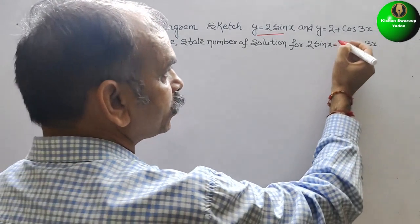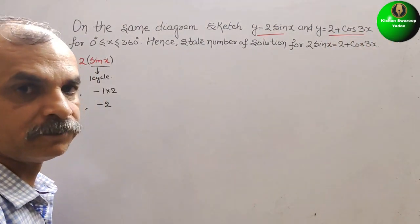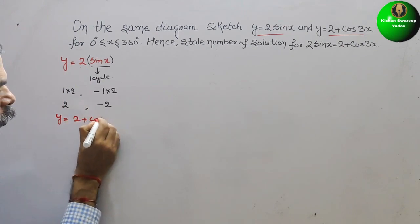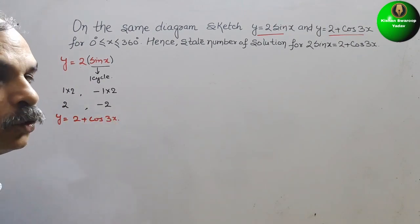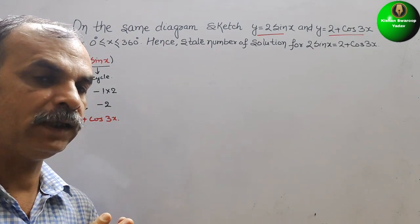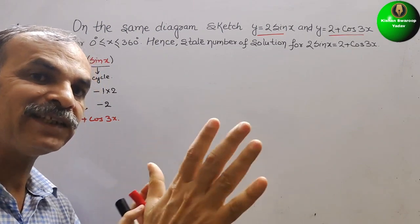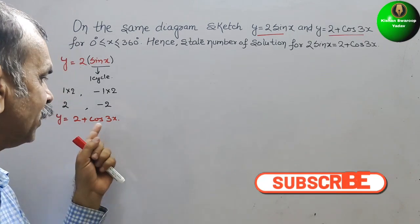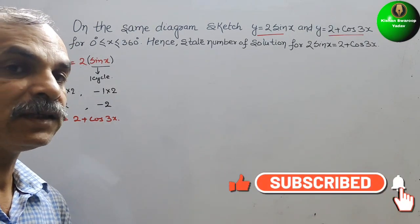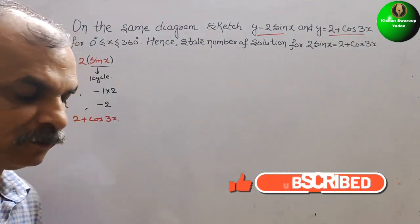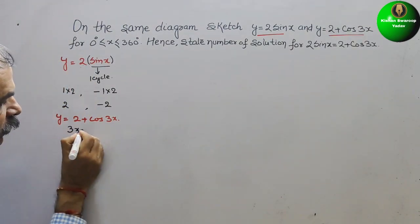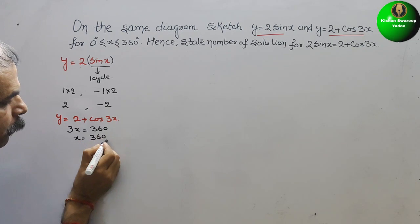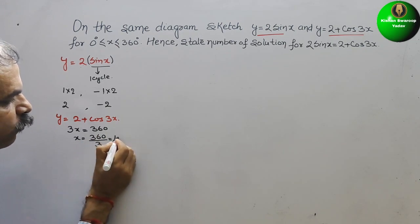The second equation is y = 2 + cos 3x. We know that one cosine cycle is 360°. Here we have 3x, so 3x = 360°, which gives x = 360 ÷ 3 = 120°.